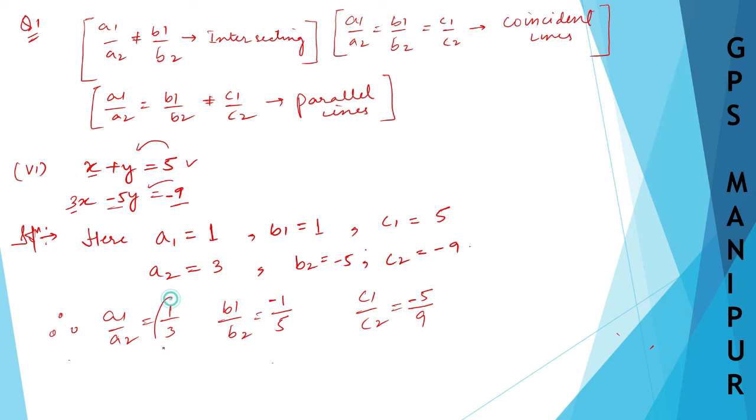You can see the first two are not equal. Since a1 by a2 is not equal to b1 by b2, what is the condition? If a1 by a2 is not equal to b1 by b2, that is intersecting. So the lines are intersecting lines.